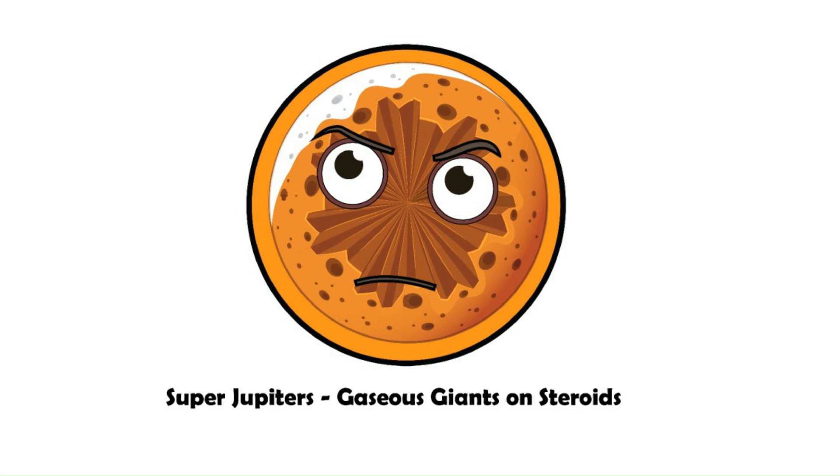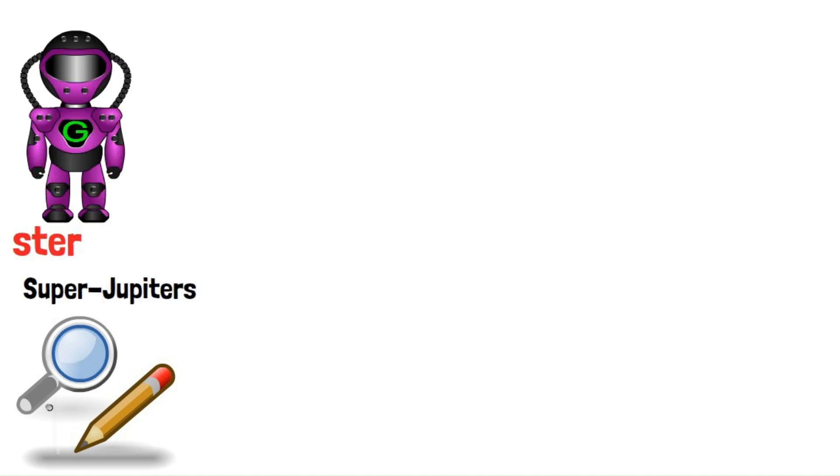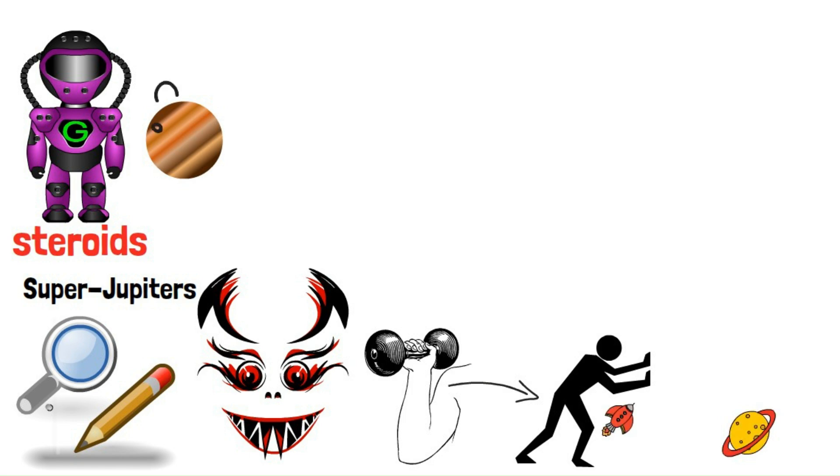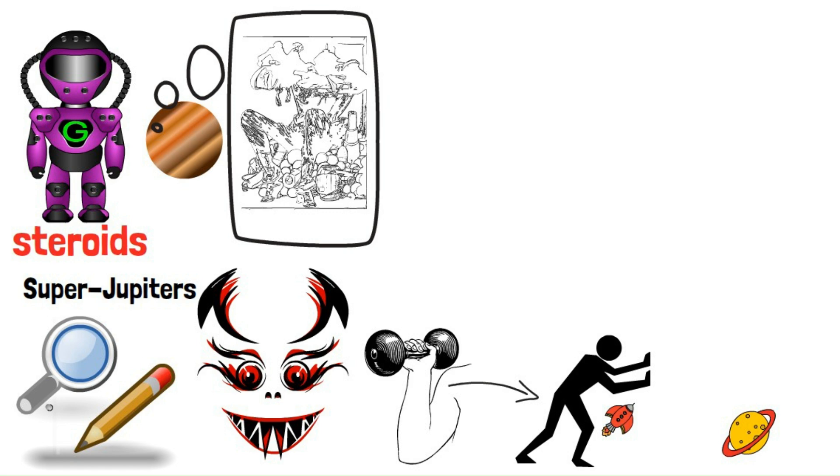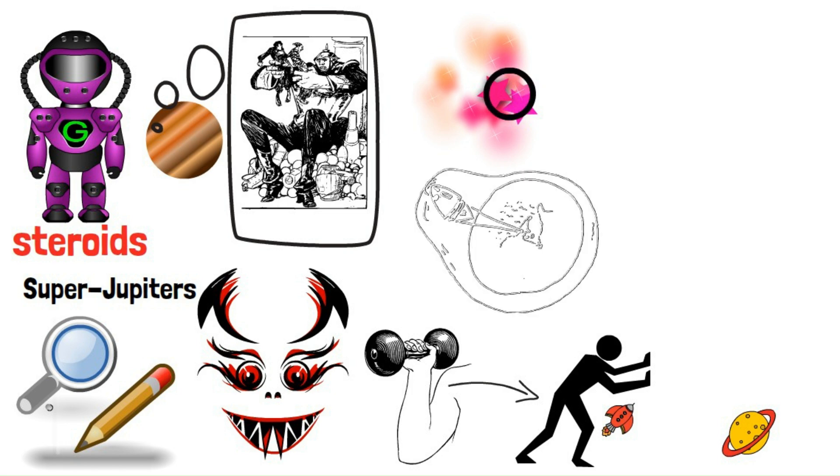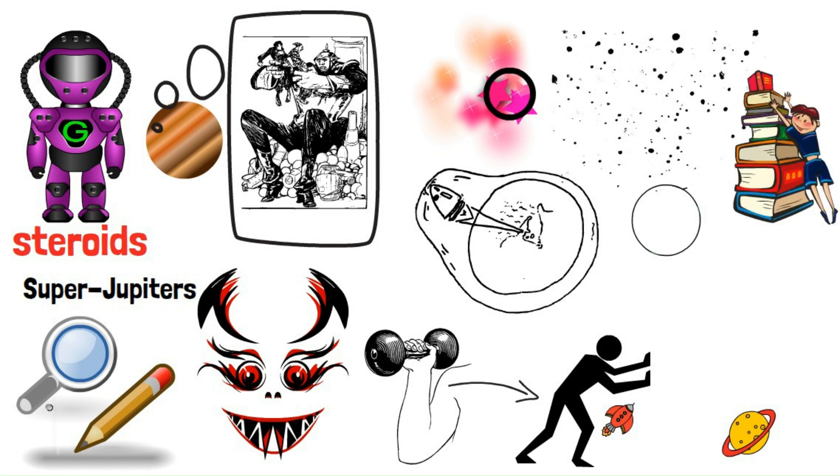Super Jupiters. Gaseous Giants on Steroids. Our exploration isn't over yet. We have Super Jupiters, gas giants on steroids that dwarf even our mighty Jupiter. These behemoths can have masses several times greater, pushing the boundaries of what we thought possible for planets. Imagine a gas giant so massive it could swallow several Jupiters whole. Super Jupiters might form in very dense regions of stellar nurseries, where immense gravitational forces pull in vast quantities of gas and dust. Studying these colossal planets can help us understand the extremes of planetary formation, and the factors that influence planets' ultimate size and composition.